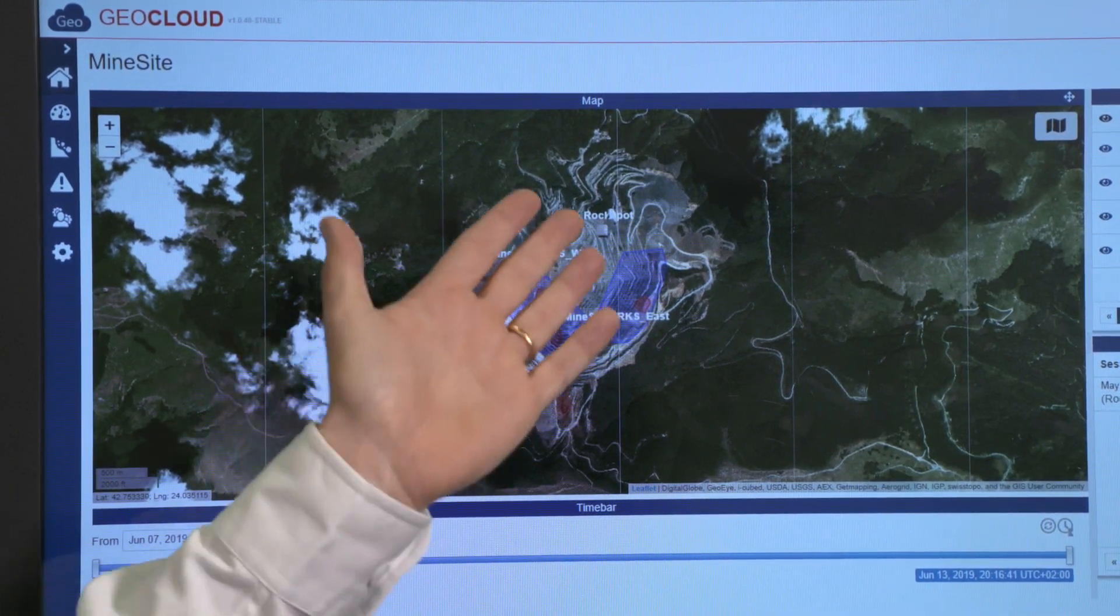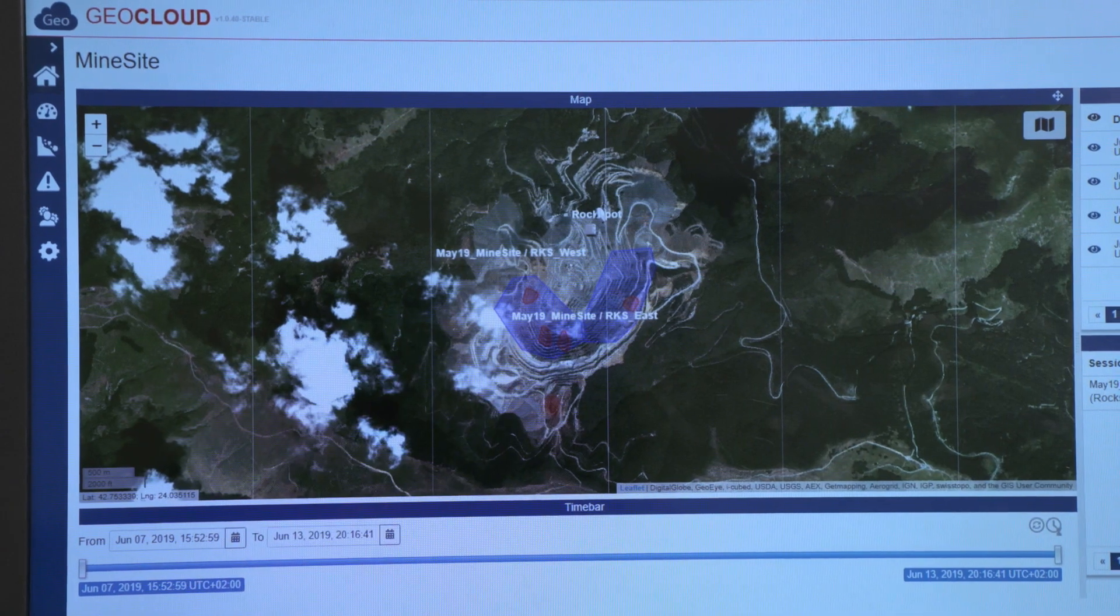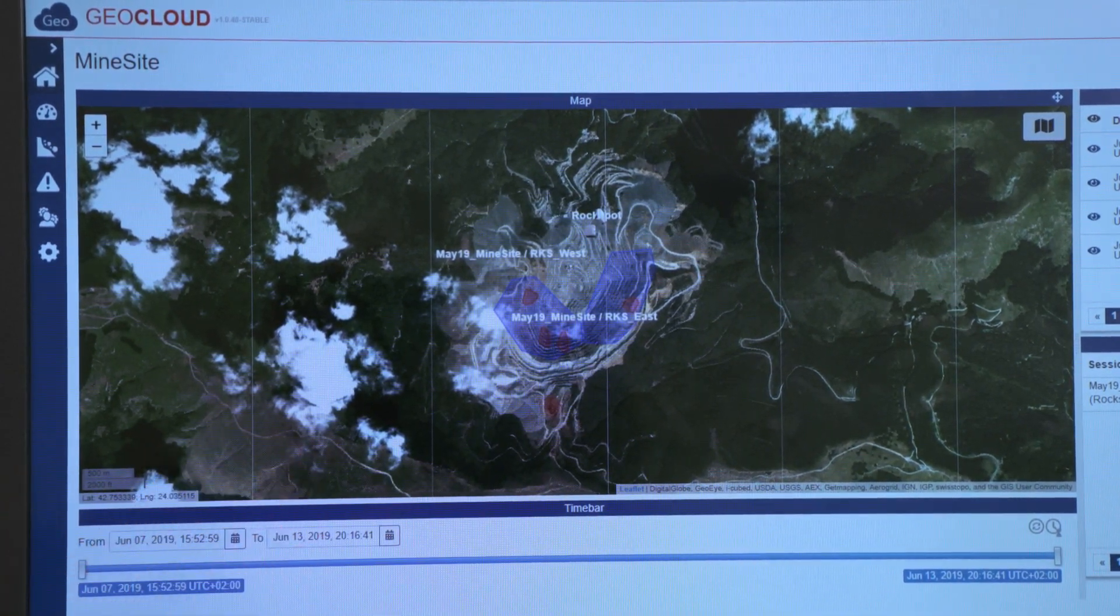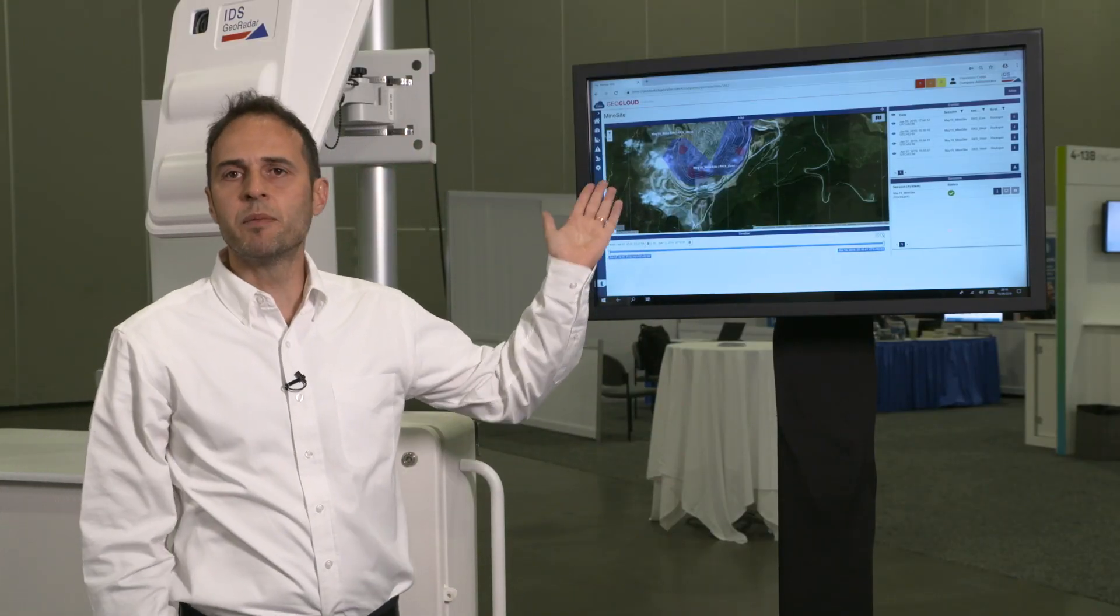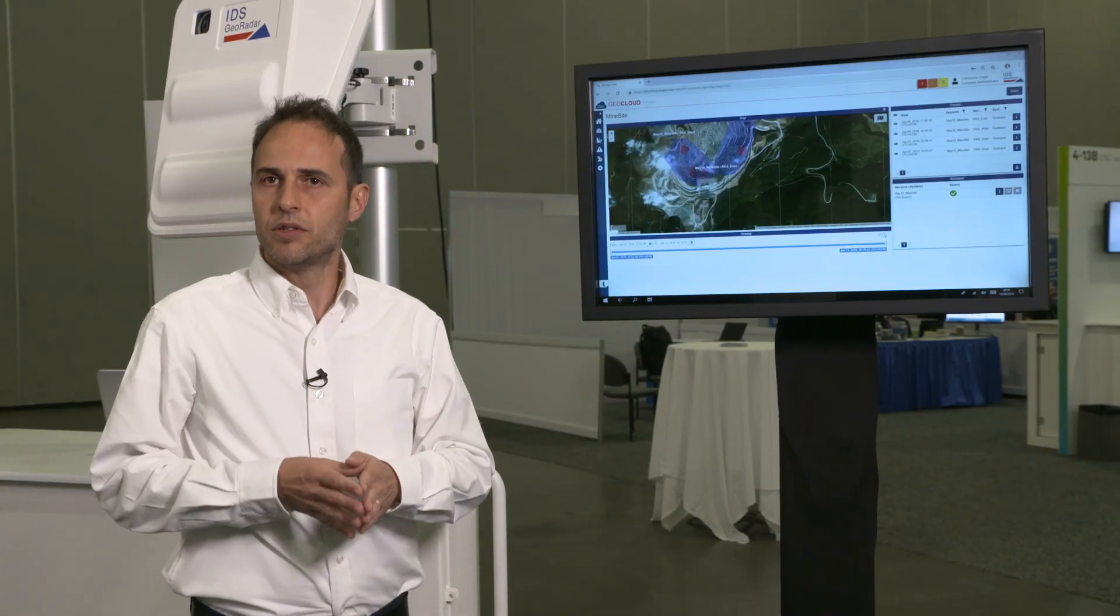In this case, we have two Rockspot units and the blue area shows what is the area covered, where the red polygon gives you the information and the location where the rockfall happened.